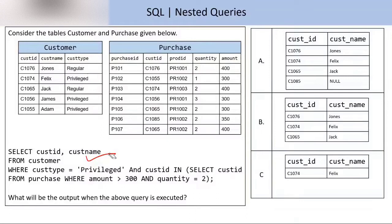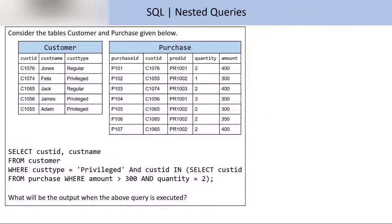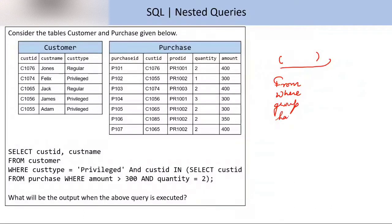When we solve a nested query, we solve the inner query first — that is the query inside the bracket. The flow of execution is: first we check FROM, then WHERE, then GROUP BY if present, then HAVING if present, then aggregate functions if present, and then SELECT. This flow of execution remains the same whether we are solving the inner query or the outer query.